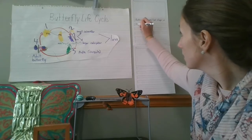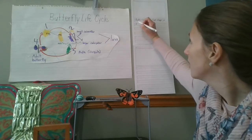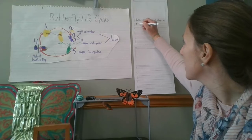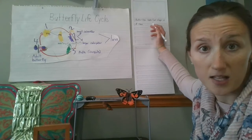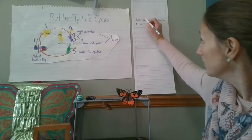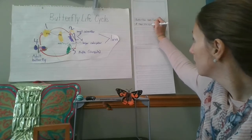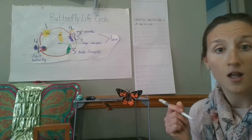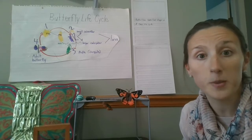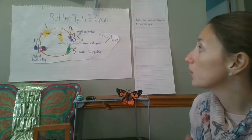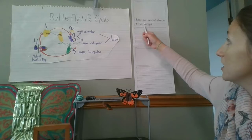Instead of saying 'its life cycle' since I'm talking about more than one butterfly, I'm going to change that word to 'their' — t-h-e-i-r — because every butterfly has the same four stages of their life cycle. So: 'Butterflies have four stages in their life cycle.' That's my topic sentence. This is an informational piece of writing that's going to tell true facts about the butterfly, and we're going to use this picture and the words on it to help us.